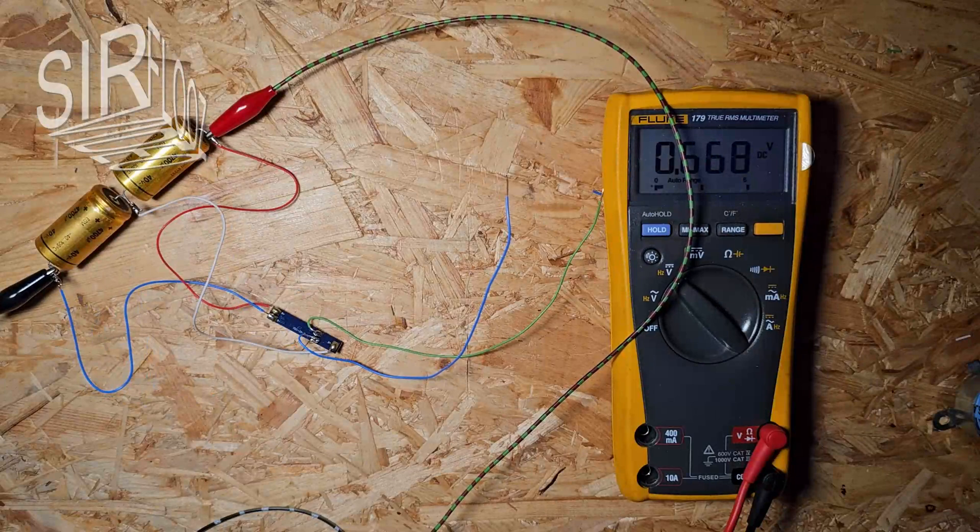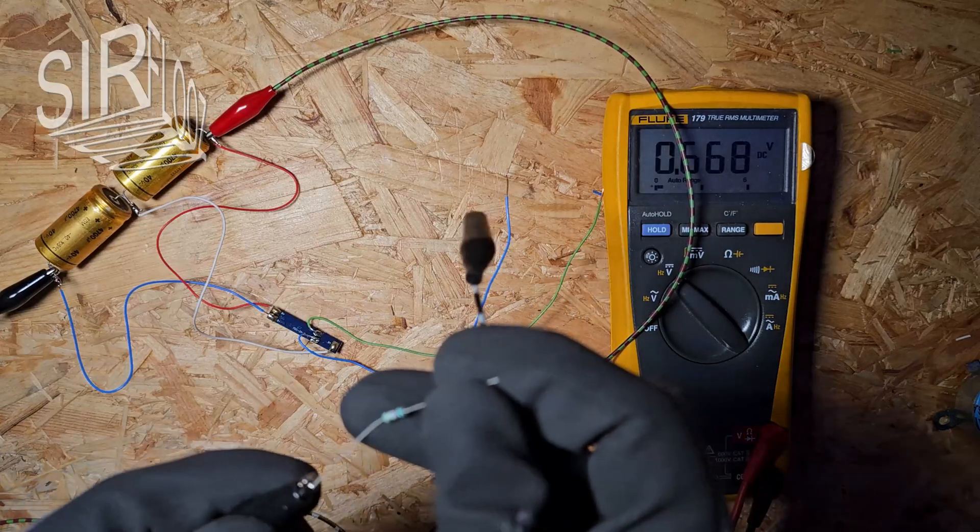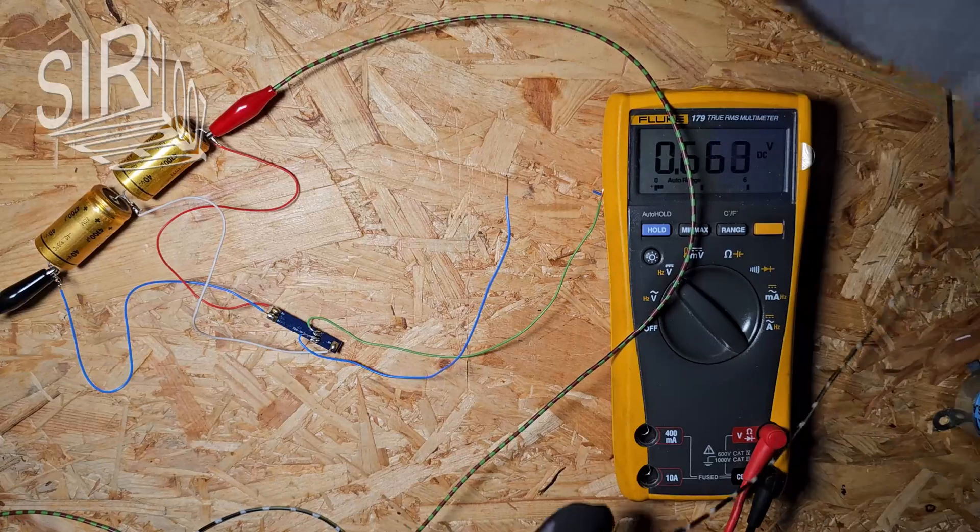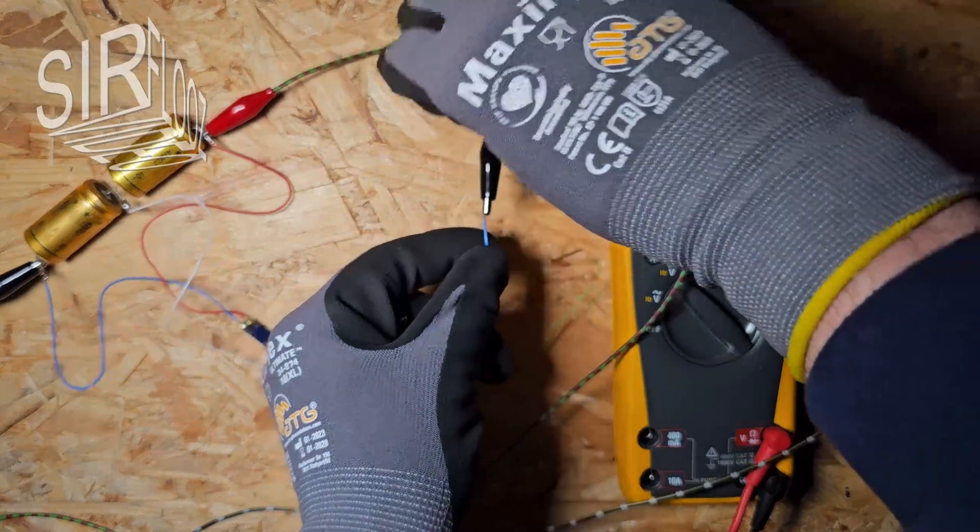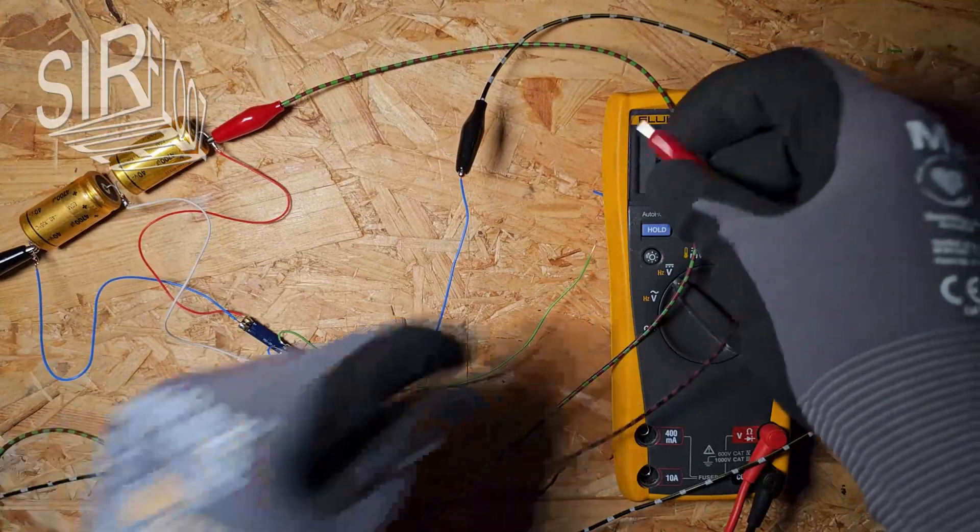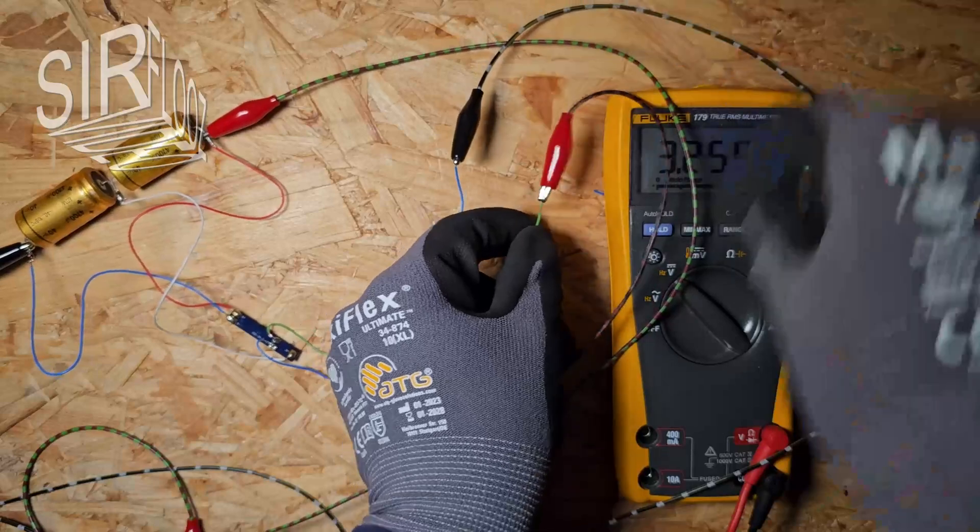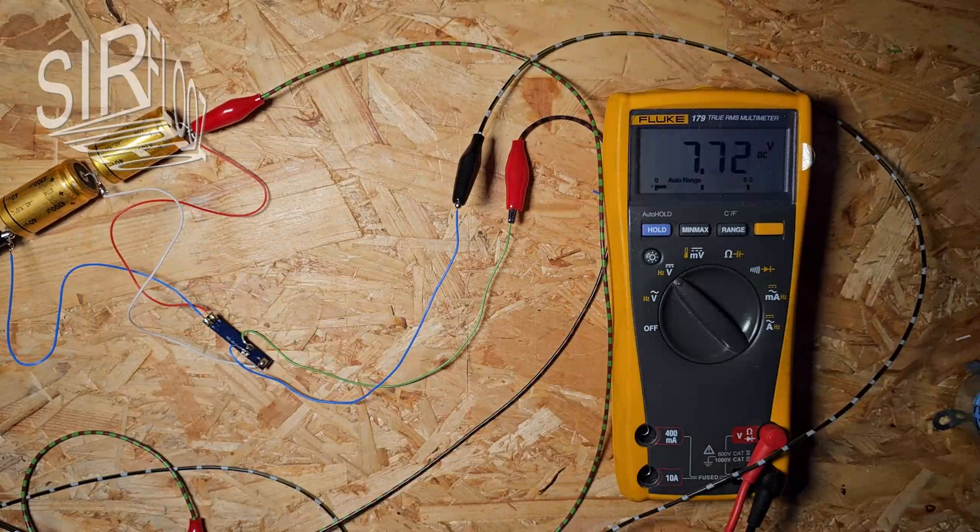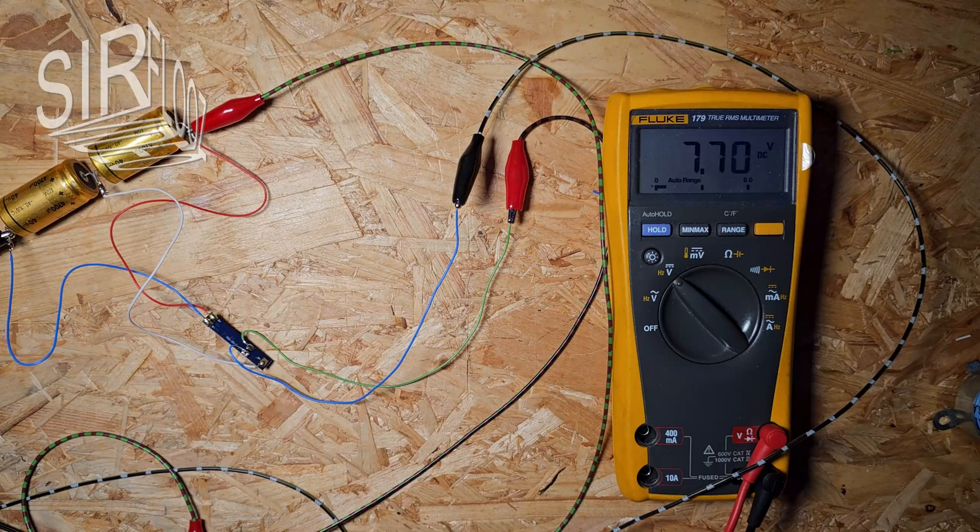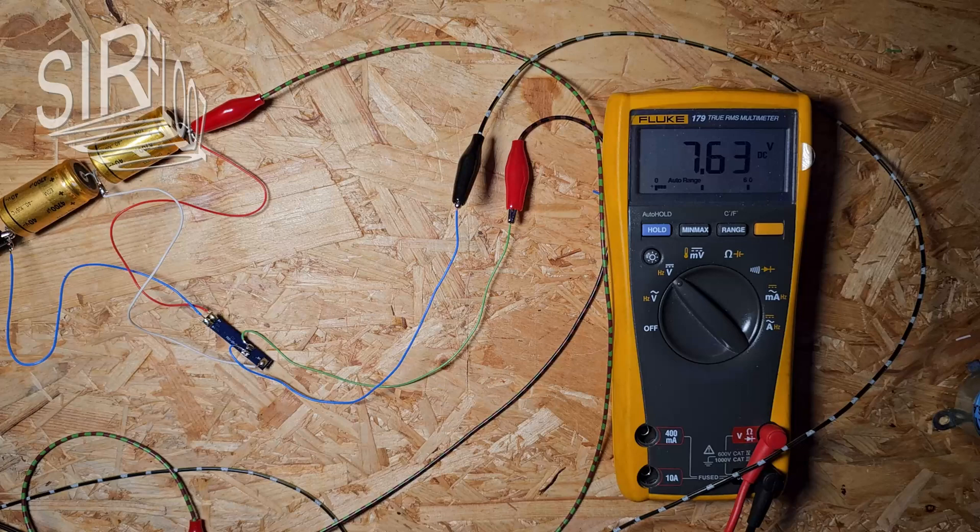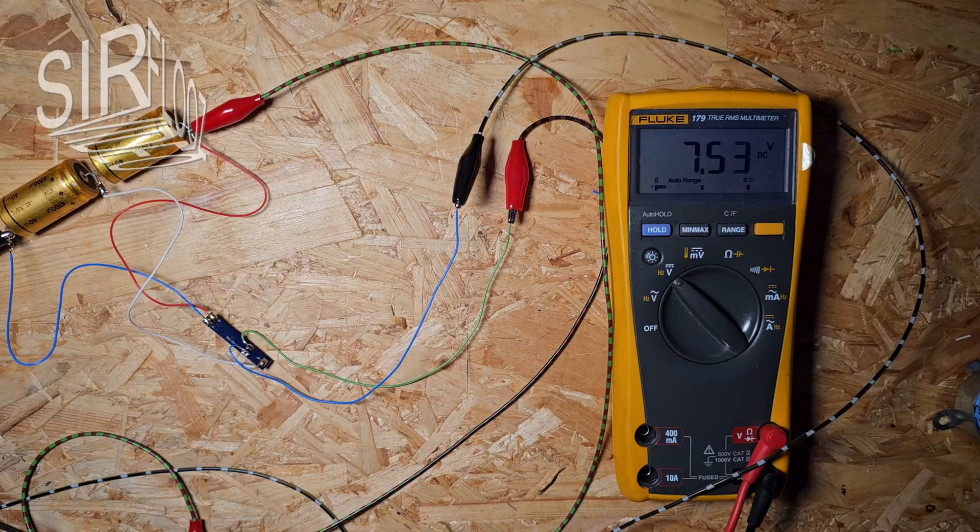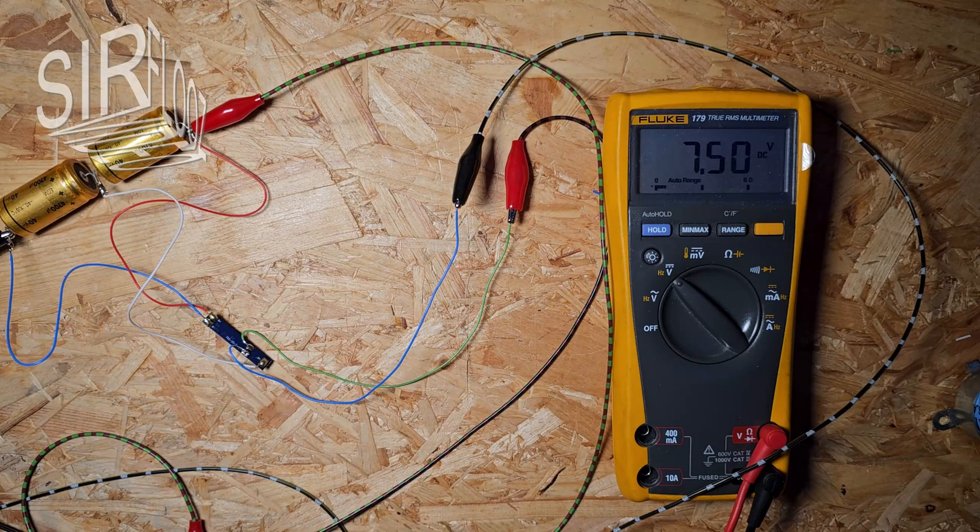If I now connect a voltage of 9 volts, the protection module should disconnect the battery if the voltage on one of the cells or across both cells becomes too high. Aha, the shutdown already occurs at a total voltage of 7.97 volts. The maximum permissible voltage is 8.4 volts, so one of the cells must have charged faster to the value above 4.2 volts. Let's see what voltages are on the individual cells.